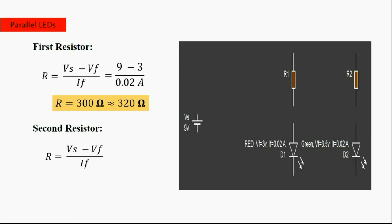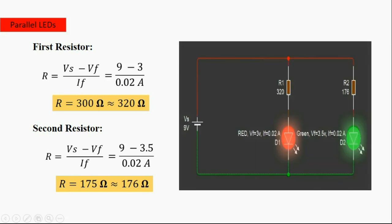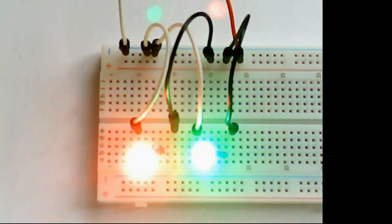The formula for the second LED is the same. Here we use a different LED — a green LED with a forward voltage of 3.5 volts and a forward current of 0.02 amperes. Substituting into the formula gives a resistance value of 175 ohms; the nearest value we can find is 165 ohms. Now you can put the resistors in the circuit. As you can see, the circuit works and you can see the blue and green LEDs. Now you can make your own circuit.